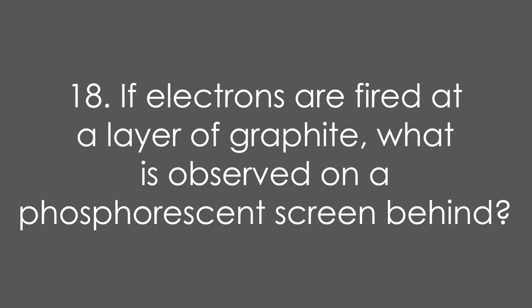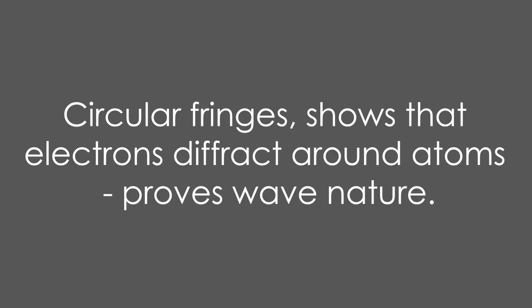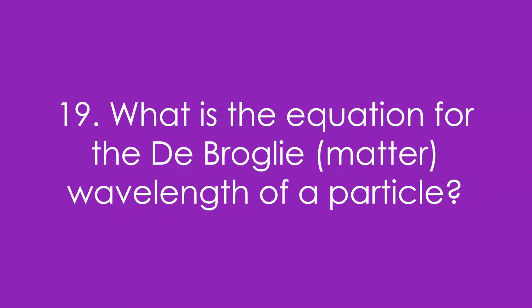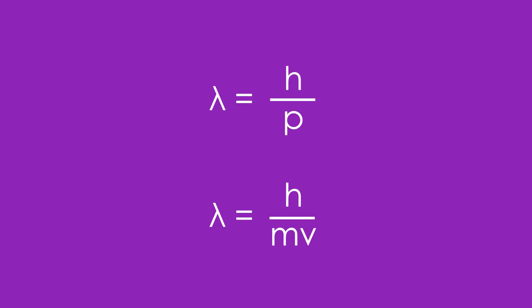Eighteen, if electrons are fired at a layer of graphite, what is observed on a phosphorescent screen behind? We see circular fringes. This shows that electrons are diffracting around the atoms, which proves the wave nature of electrons. Nineteen, what is the equation for the de Broglie wavelength — that's the matter wavelength of a particle? Lambda equals h over p, that's Planck's constant over momentum, or lambda equals h over mv.